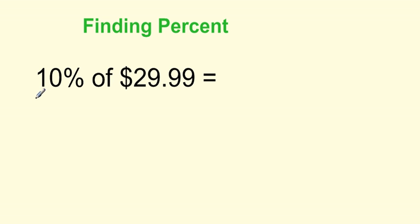Well, our first step is to convert this to a decimal. So we're going to move the decimal to the left two spots, just like dividing by 100. So we're left with 0.10. The word of means multiply. And we have $29.99.